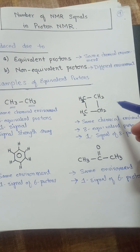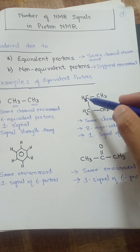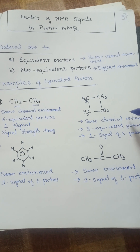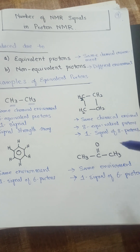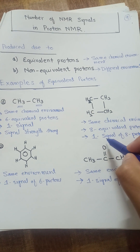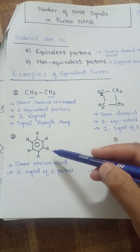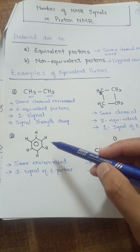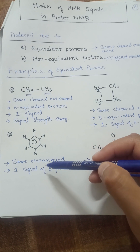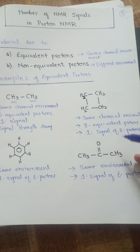Here is another example of cyclobutane, in which all the protons are in the same chemical environment. These eight equivalent protons will produce a single signal. Similarly, in benzene, the environment of all protons is the same, and one signal will be produced corresponding to six protons.